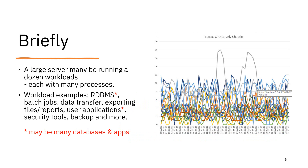Large servers typically are running maybe a dozen or so workloads, each with many processes inside. Examples of workloads include relational databases, batch jobs, data transfer, exporting files and reports, user applications, security tools, backup, and a whole bunch more. You may have multiple databases and multiple applications on a single server.